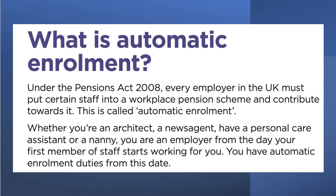Auto-enrolment is a really good example of where the government has essentially mandated a choice. People are auto-enrolled into an occupational pension scheme. If you're an employer, you must put certain contributions into a workplace pension scheme and make an employer's contribution — for anybody over the age of 22 earning more than around £180–£190 per week. This is designed to drive up enrolment in occupational pensions with a view to managing the long-term demand on the welfare state from an ageing population.